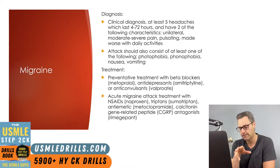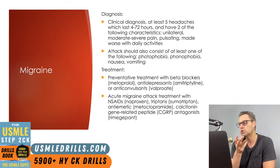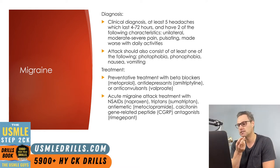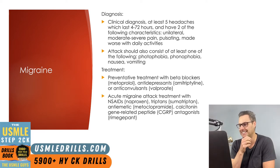Treatment consists of preventative care, which behaviorally includes avoiding any identified trigger, but also medications like beta blockers, tricyclic antidepressants, or anticonvulsants. Acute migraine attacks can be treated with NSAIDs, triptans, antiemetics, as well as calcitonin gene-related peptide antagonists, known as CGRPs.